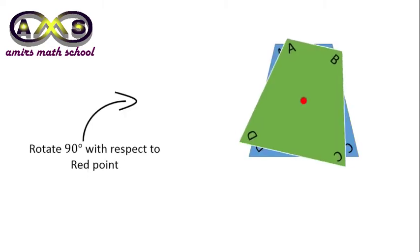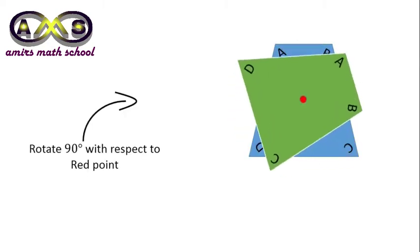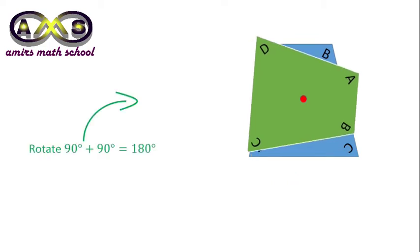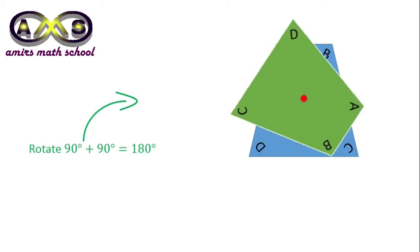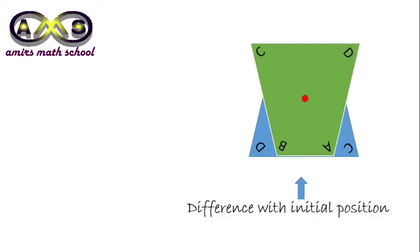Now, for a trapezium, after 90 degree rotation with respect to the red point from the initial position, the new position differs with the initial position. After 180 degree, it still differs with the initial position.